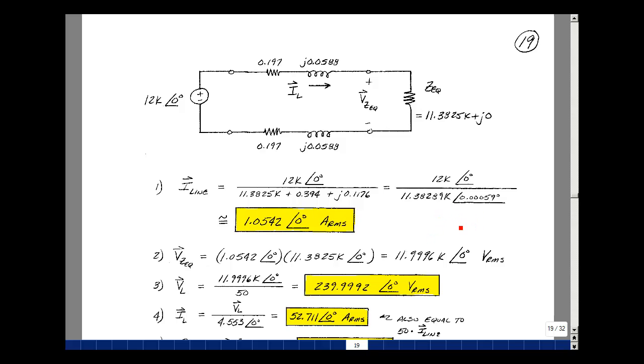And the angle is virtually zero. It's actually 0.00059 degrees. The ratio of these two is about 1.0542 amps at angle zero.